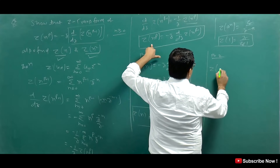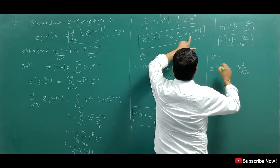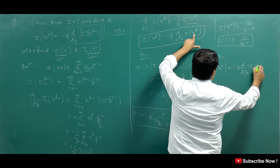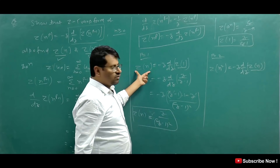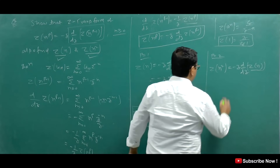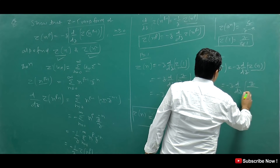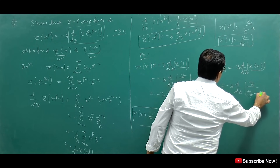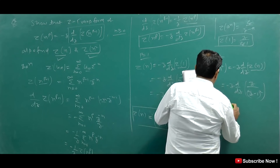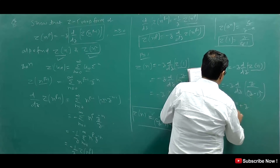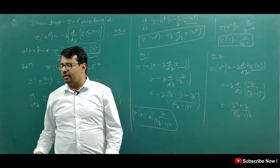Now putting p=2: Z{n²} = -Z times d/dz of Z{n}. We just proved Z{n} = Z/(Z-1)², so Z{n²} = -Z times d/dz of [Z/(Z-1)²]. Differentiating Z/(Z-1)² using the quotient rule and simplifying directly gives Z{n²} = Z(Z+1)/(Z-1)³. This is how we solve these types of questions.